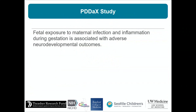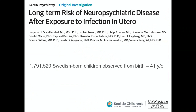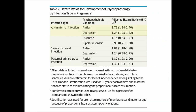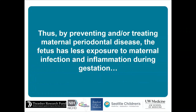Fetal exposure to maternal infection and inflammation during pregnancy is associated with adverse neurodevelopmental outcomes. One publication from University of Washington researchers looked at over a million Swedish-born children from birth through age 41 and found that fetal exposure to any maternal infection — including even a urinary tract infection — significantly increased the risk of autism or depression. Similar findings have been shown in animal models.